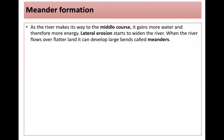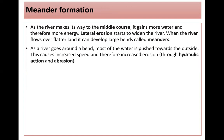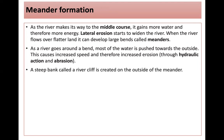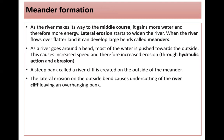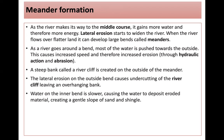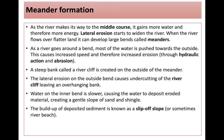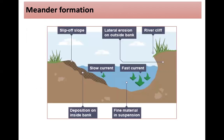Meanders form in the middle and lower course of the river. As the river gains more water and therefore more energy, lateral erosion starts to widen the river. When the river flows over flatter land, it develops large bends called meanders. As the river goes around a bend, most water is pushed towards the outside, causing increased speed and increased erosion through hydraulic action and abrasion. A steep bank called a river cliff is created on the outside of the meander. The lateral erosion causes undercutting of the river cliff, leaving an overhanging bank. Water on the inner bend is slower, causing deposition of eroded material and creating a gentle slip-off slope of sand and shingle.